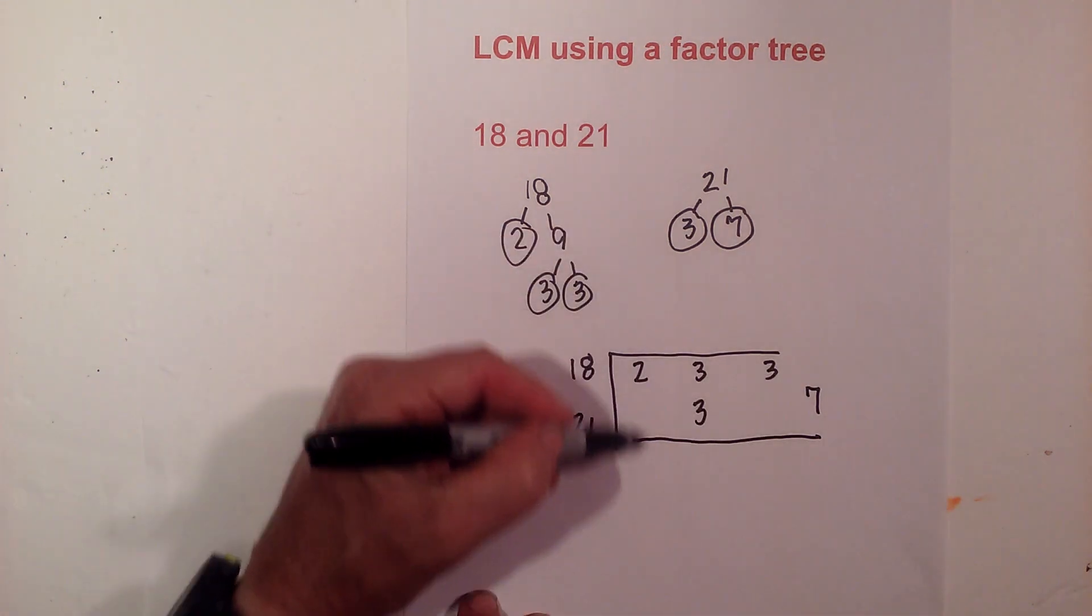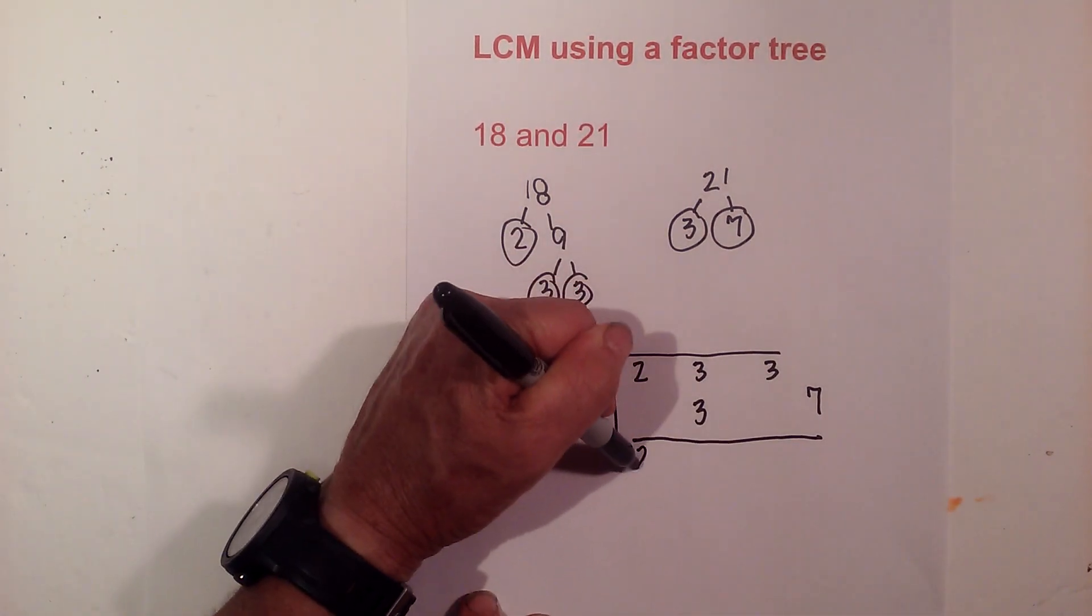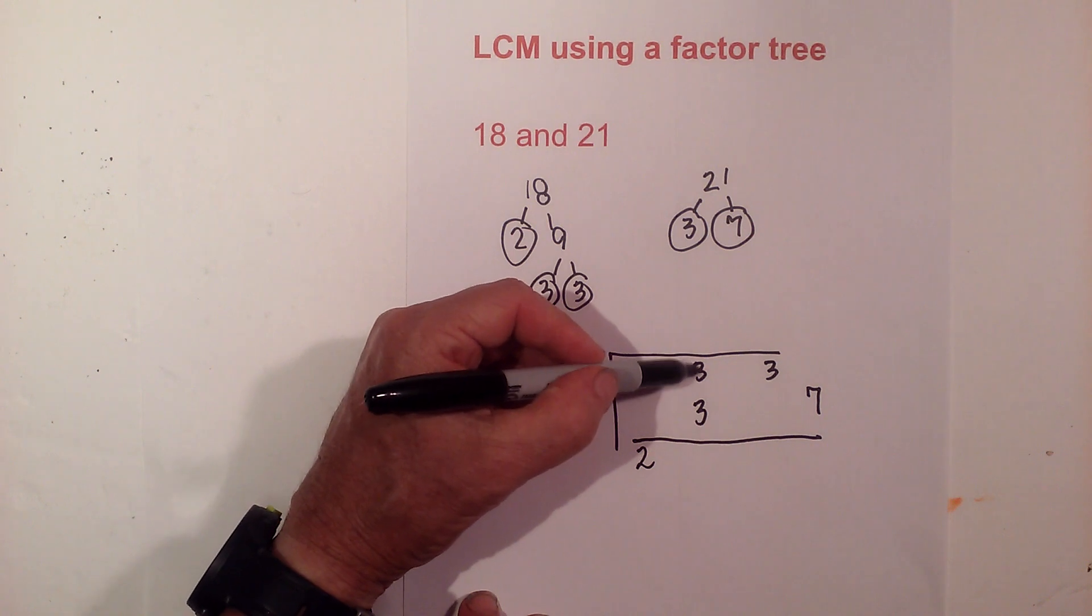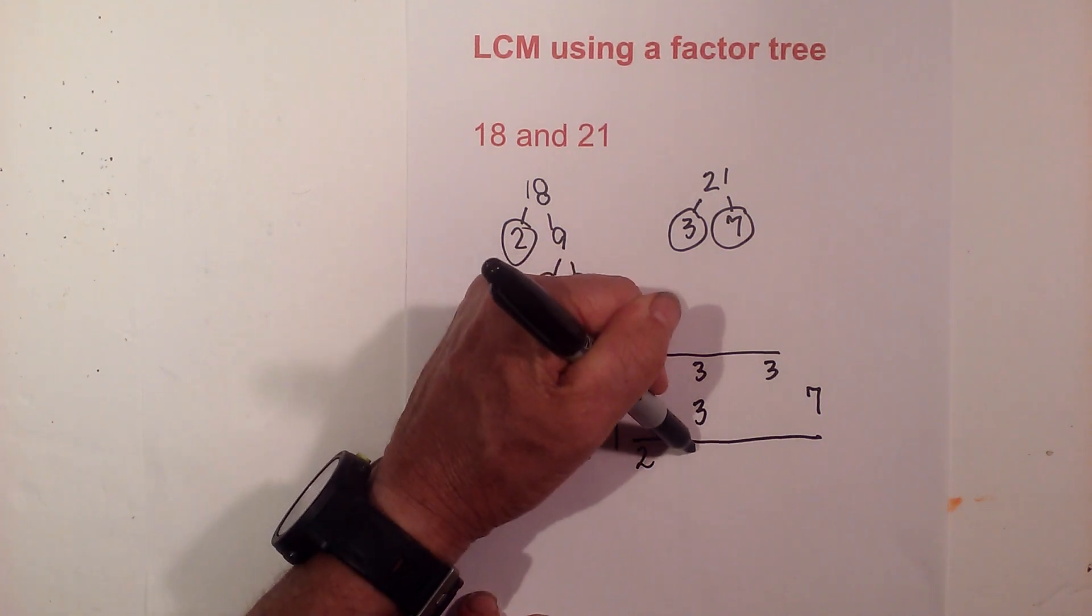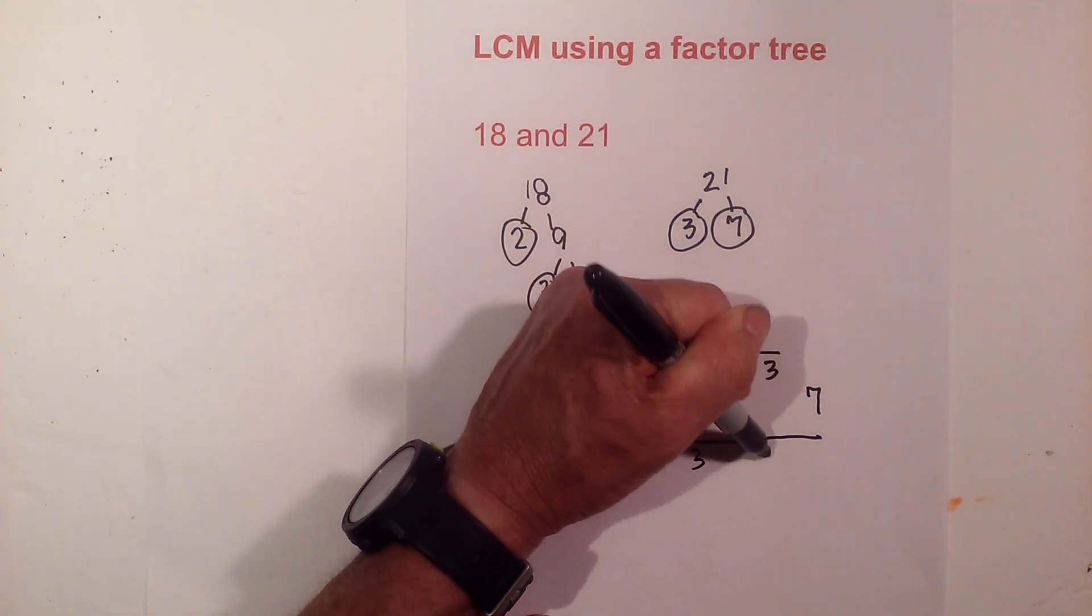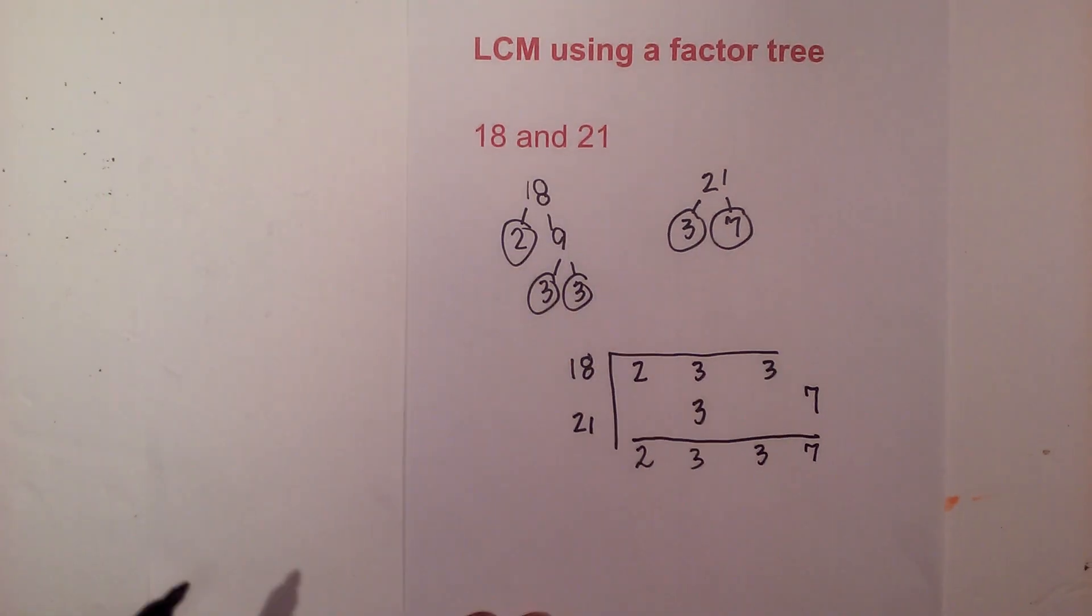Now all you do is you bring all the numbers down and multiply them. However, you apply this rule: if you have a vertical pair, you only use one number. So you can see how I brought all the numbers down.